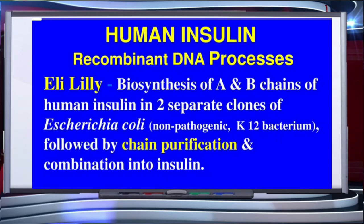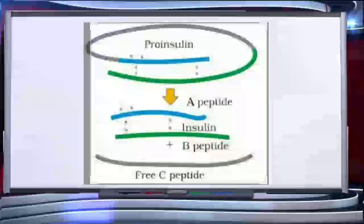Eli Lilly, an American company, in 1983 prepared two DNA sequences corresponding to the A and B chains of human insulin and introduced them into the plasmids of Escherichia coli to produce insulin chains. Chains A and B were produced separately, extracted, and combined by creating disulfide bonds to form human insulin.